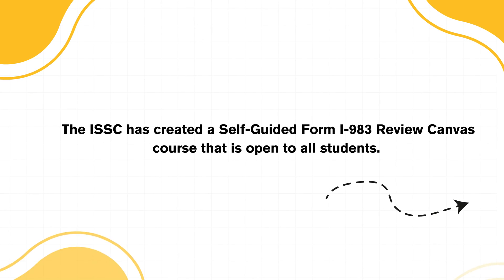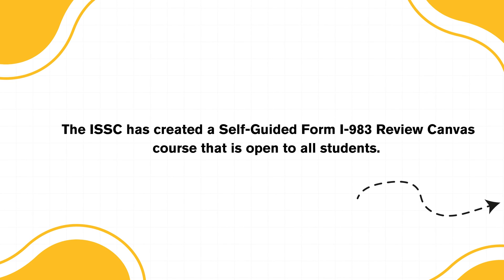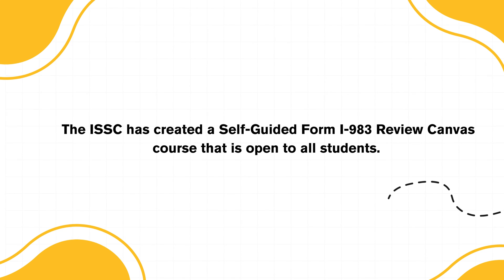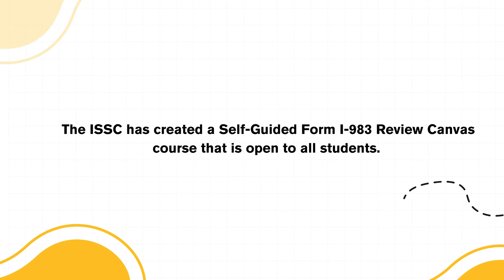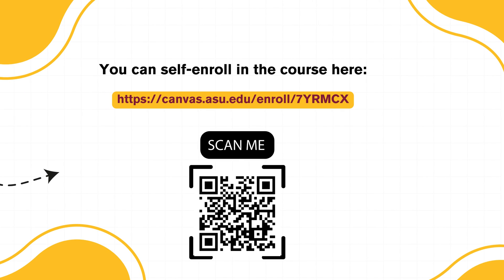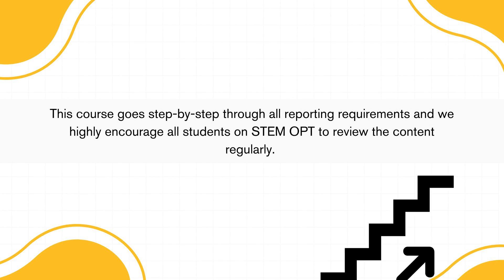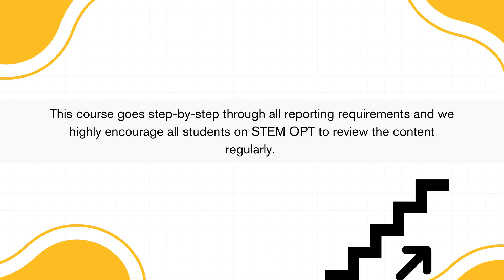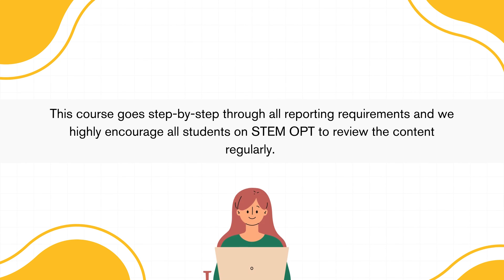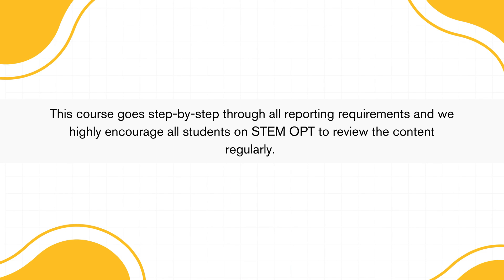The ISSC has created a self-guided Form I-983 review Canvas course that is open to all students — you can self-enroll in the course. This course goes step-by-step through all reporting requirements, and we highly encourage all students on STEM OPT to review the content regularly.